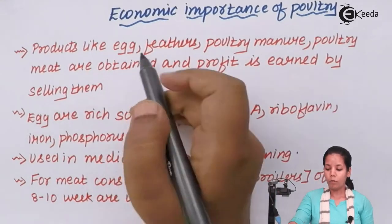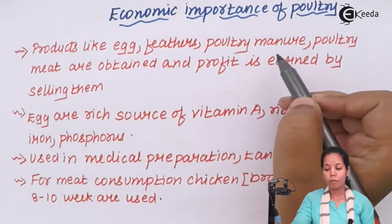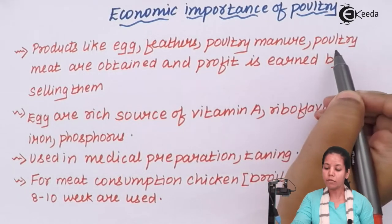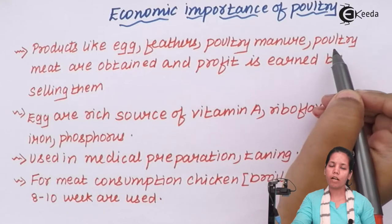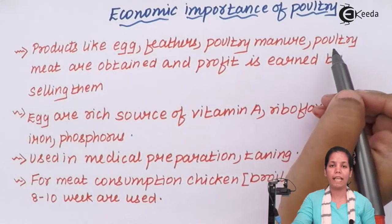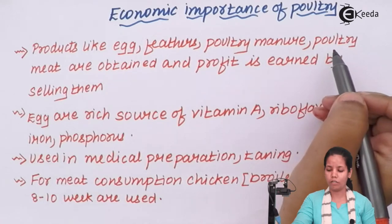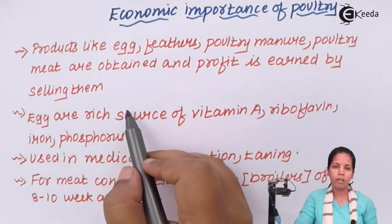Now, poultry products like egg, feathers, poultry manure as well as meat are some of the products which are obtained once you rear poultry animals, hens, chickens or boilers. Now, selling them or using them for consumption are the two main reasons.